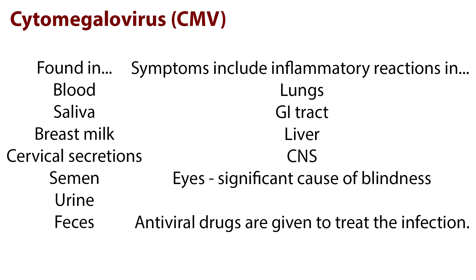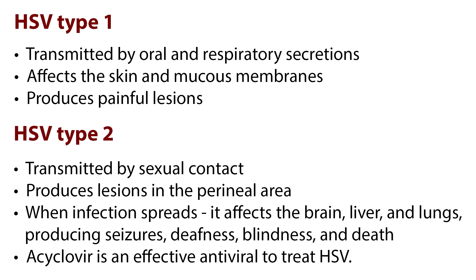HSV type 1 is transmitted by oral and respiratory secretions, affecting the skin and mucous membranes and producing painful lesions. HSV type 2 is transmitted by sexual contact, producing similar lesions in the perineal area. When the infection spreads, it affects the brain, liver, and lungs, producing seizures, deafness, blindness, and death. Acyclovir is an effective antiviral to treat HSV.